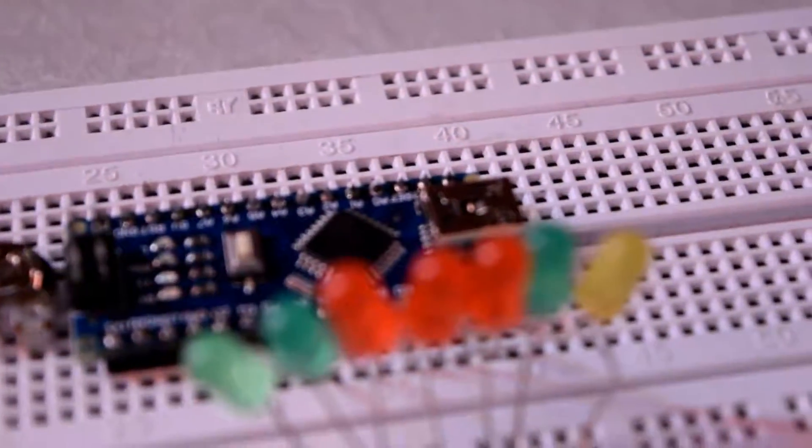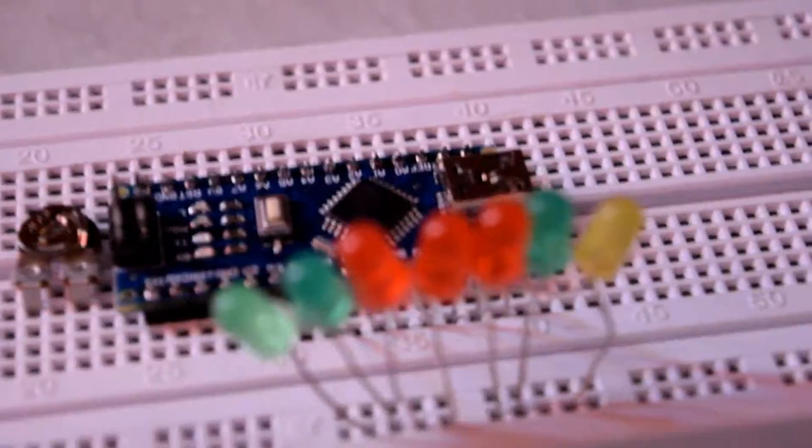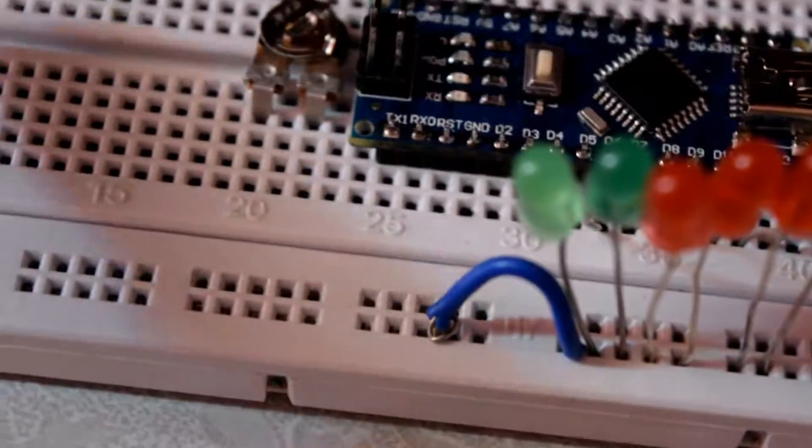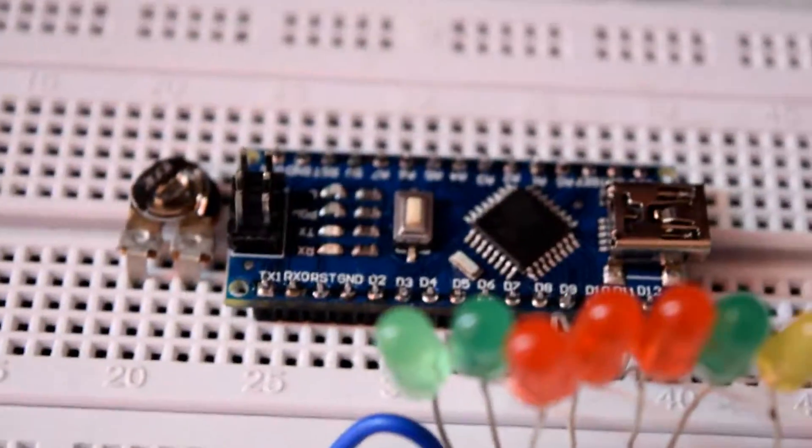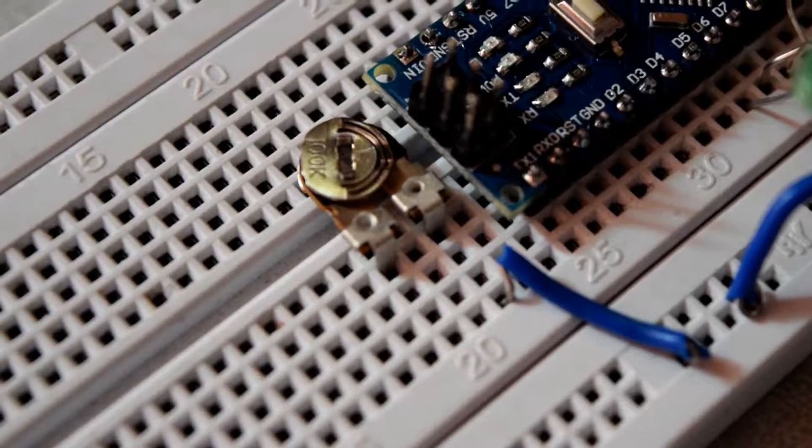I counted a bit wrong, but that's okay. The next step is using the variable resistor. One terminal should be connected to all the negative terminals. The remaining two terminals - one should be connected to positive power supply and the other to the ground pins of the Arduino.